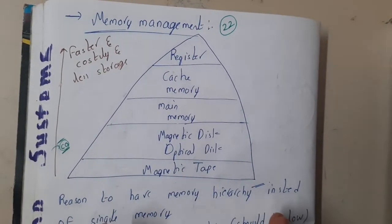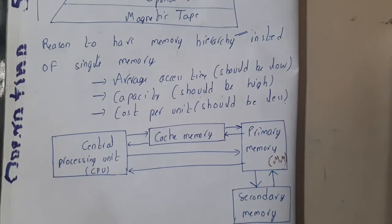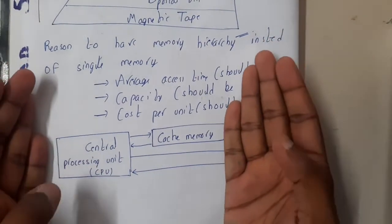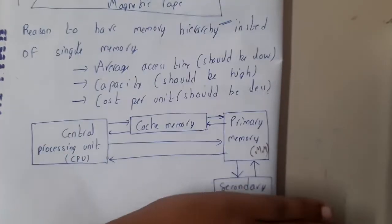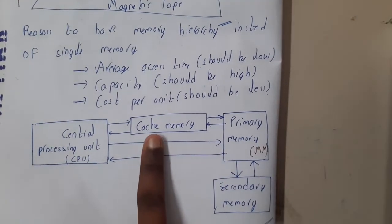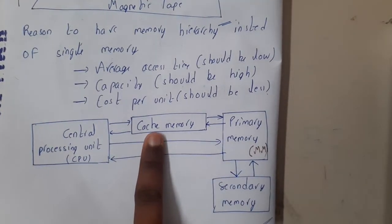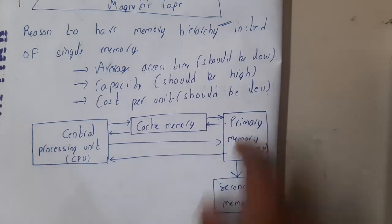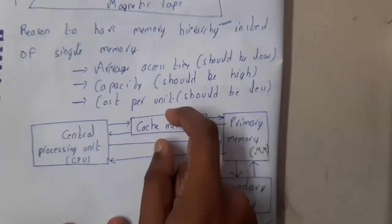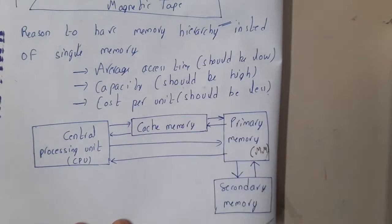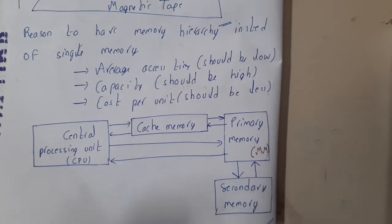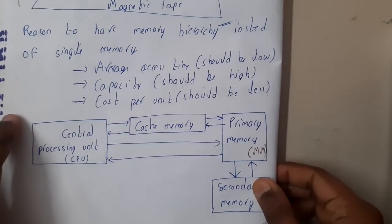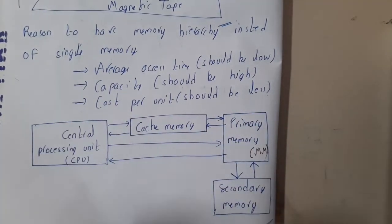The main difference with respect to operating system is: in computer organization we focused on the transfer between the CPU, cache, and primary memory — we never talked about secondary memory there, and we mainly concentrated on cache, solving cache replacement algorithms and cache mapping. But when it comes to operating systems, we are more concentrated on secondary memory and primary memory, and how to manage them in an efficient way.